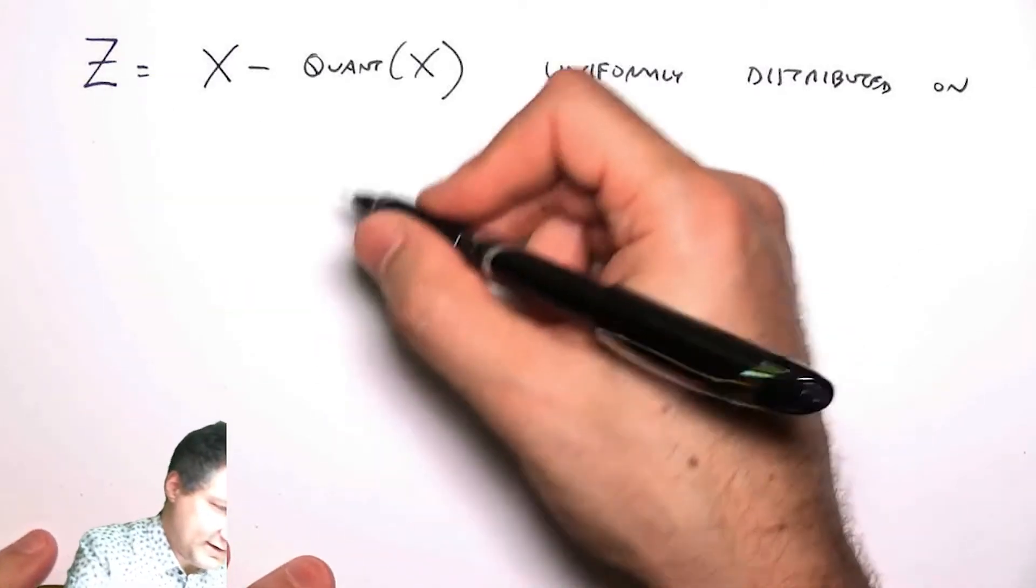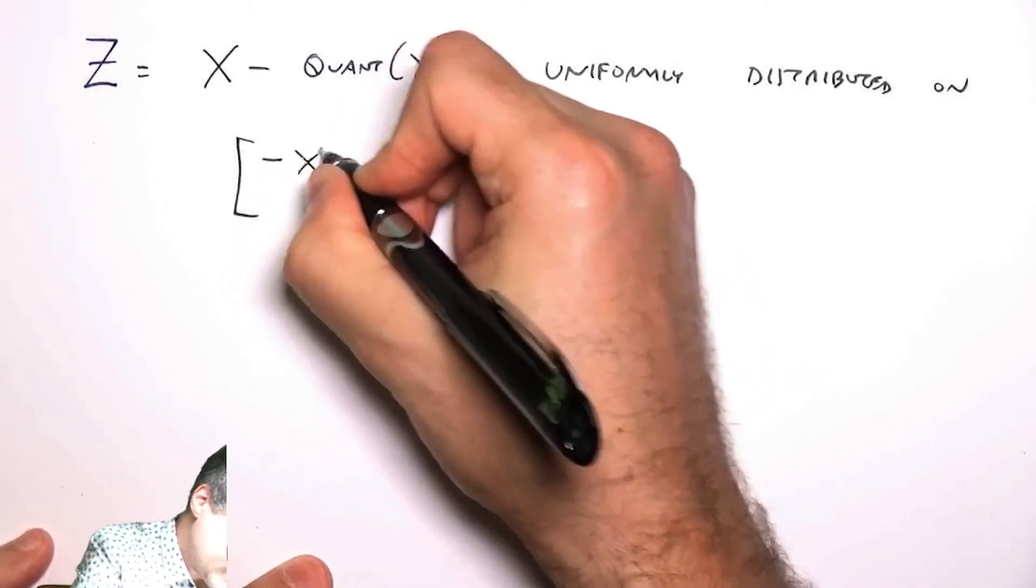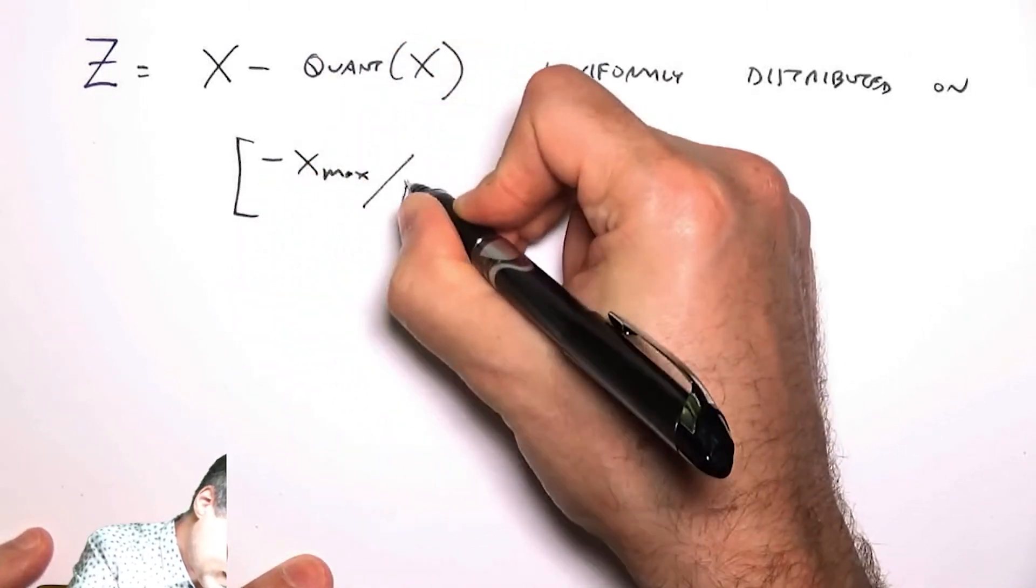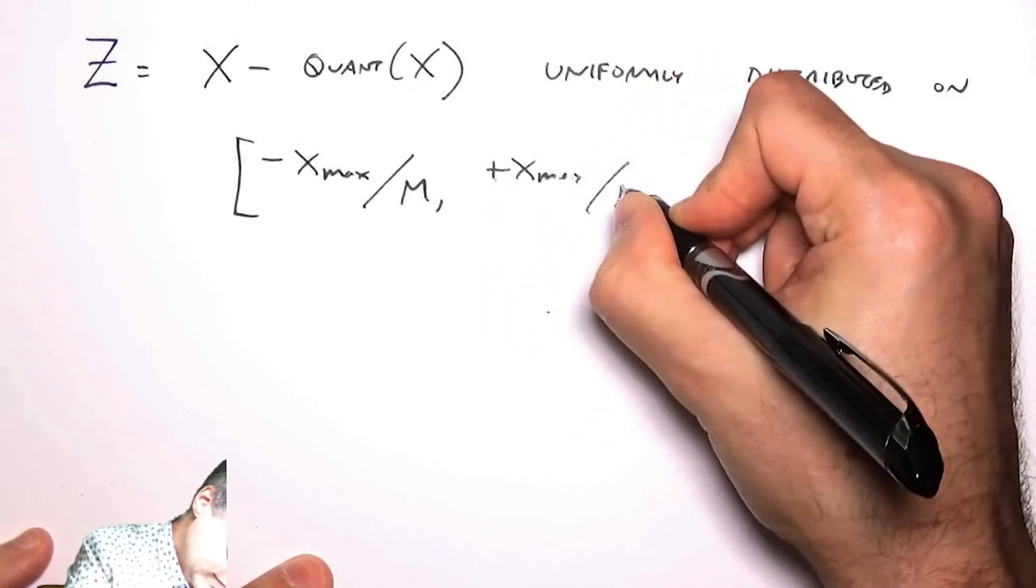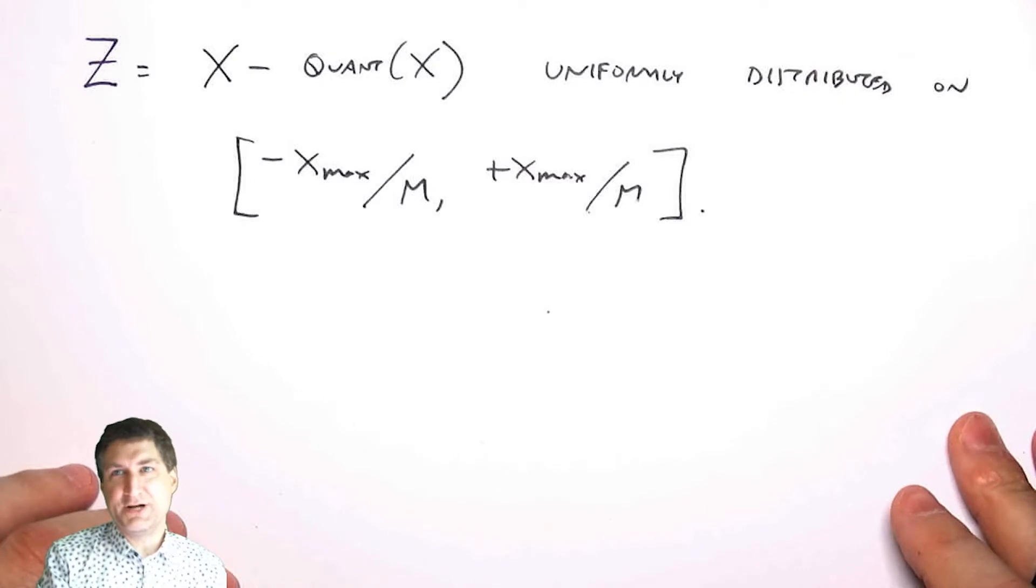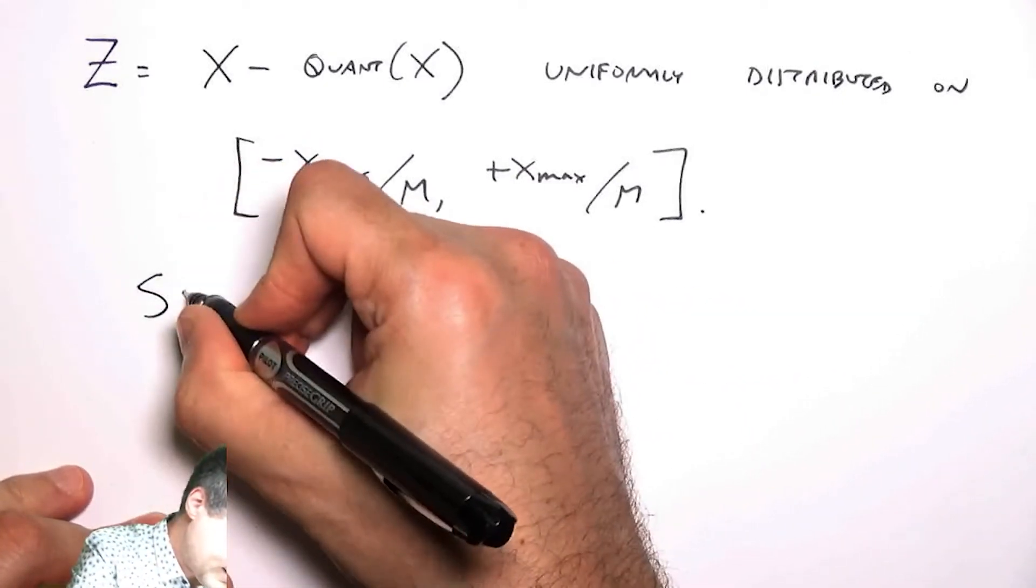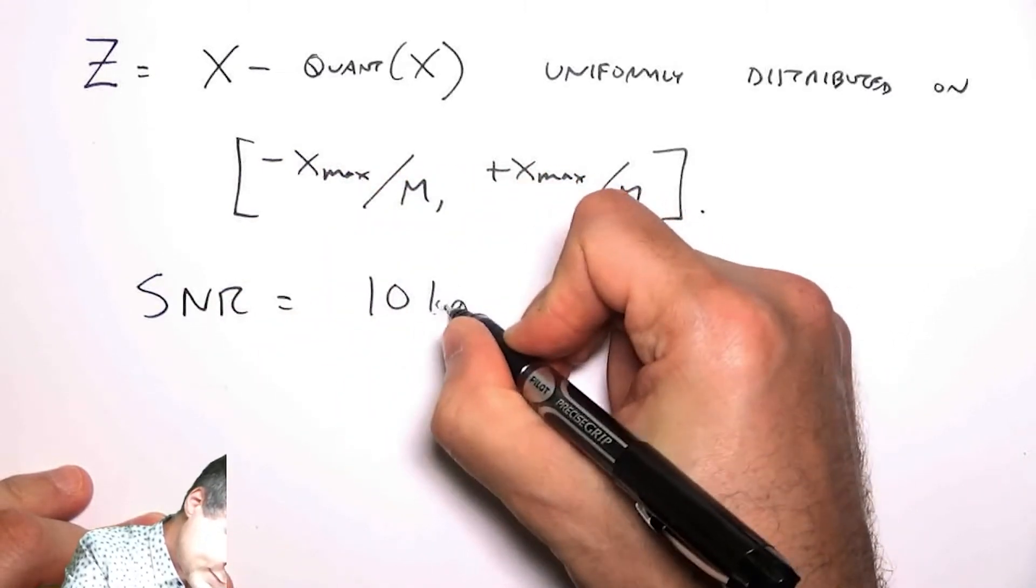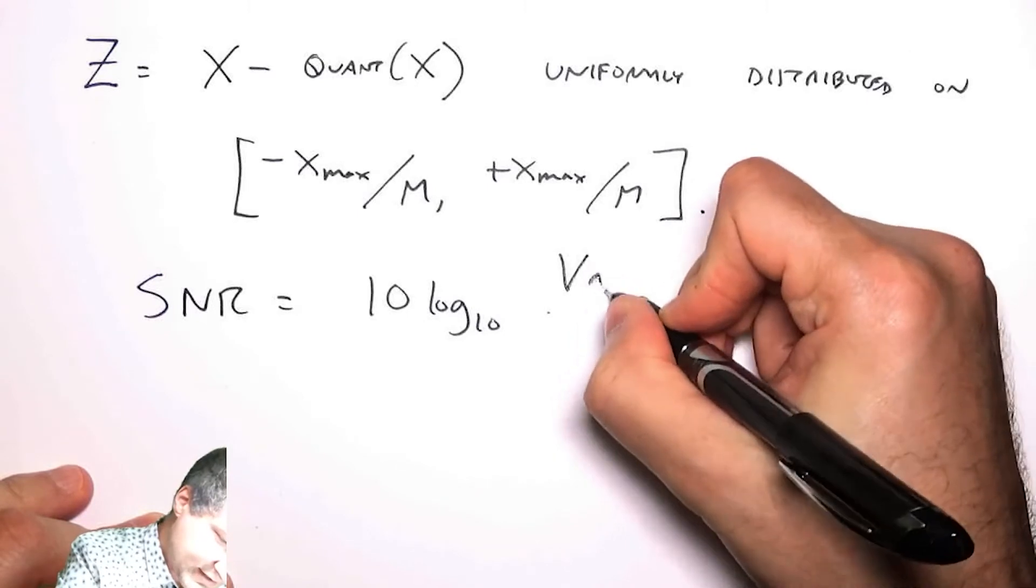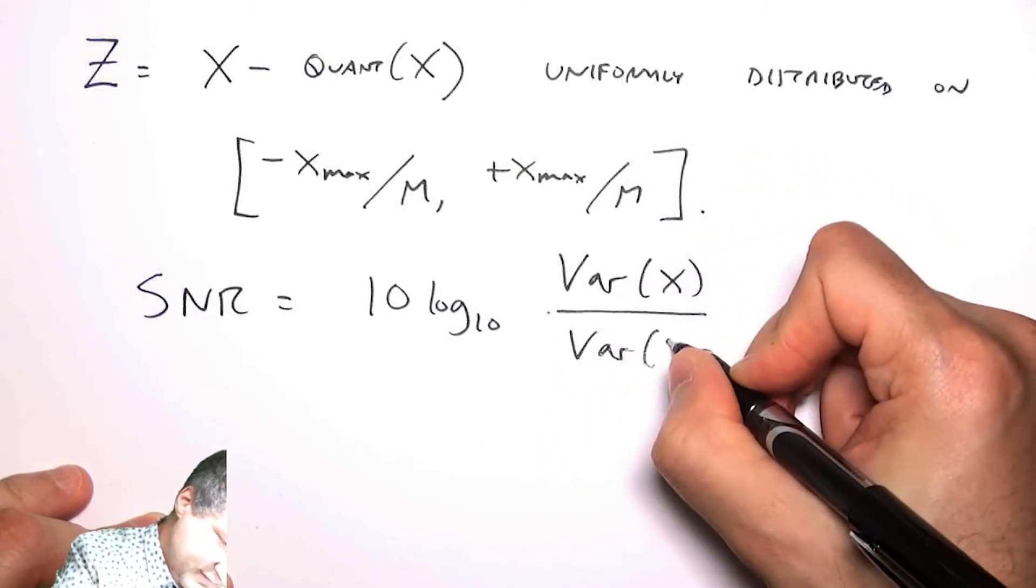So that means that my error is going to be distributed in this range. And as an audio engineer, maybe the thing I'm interested in is the signal to noise ratio, the SNR. The SNR is defined in this decibel way: 10 log_10 the variance of the signal over the variance of the noise.